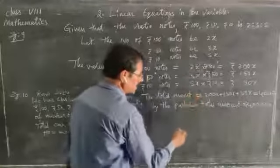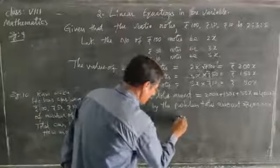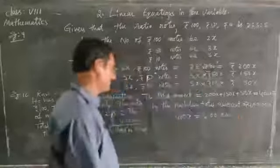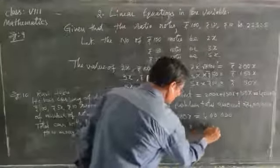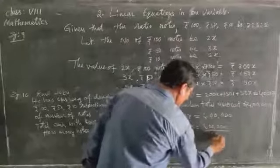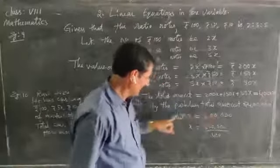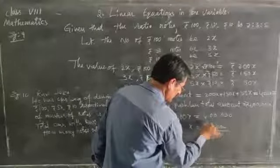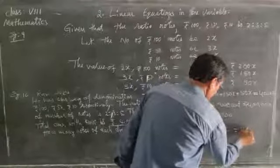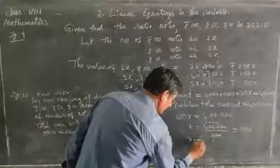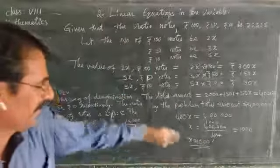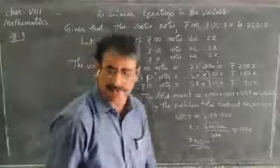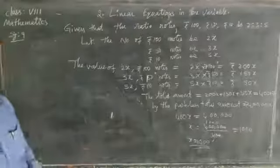From these two expressions we get 400x equal to 4 lakhs. This is a simple equation. Cancelling two zeros, we get x equal to 1000. We got the x value. If we know x, we can find the number of notes of each type.